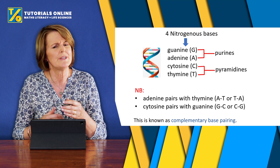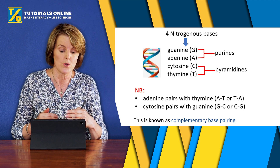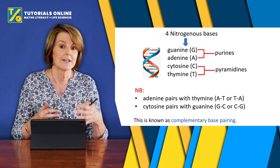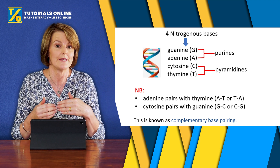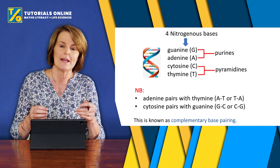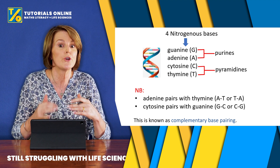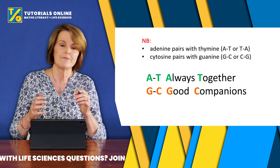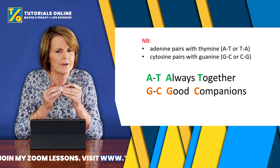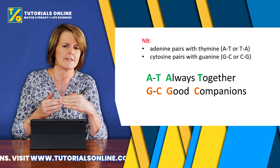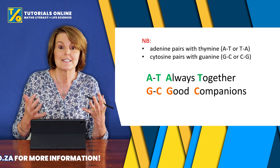It's more important that you know the four bases and how they pair up, because they always pair up in the same way. You always have adenine with thymine, and cytosine with guanine — we call that complementary base pairing. Complementary base pairing is a useful phrase to remember and use in discussions. To help you remember: adenine and thymine are always together, and guanine and cytosine are good companions. So A and T always together, and G and C good companions.